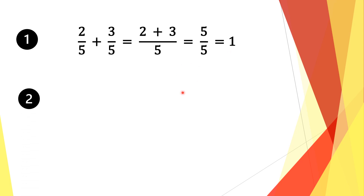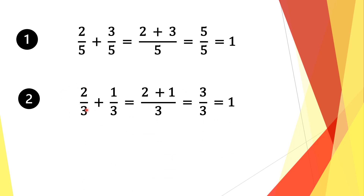Moving on to equation 2. We have a fraction two-thirds plus one-third. Again, we have a common denominator of 3. So we take a common factor of 3. 3 divided by 3 is 1, and 1 times 2 is 2. We move along the plus sign, then do the same thing for the second fraction. 3 divided by 3 is 1, and 1 times 1 is 1. We add the numerators together: 2 plus 1 is 3. We bring along the denominator 3, and 3 divided by 3 equals 1. So our solution is 1.